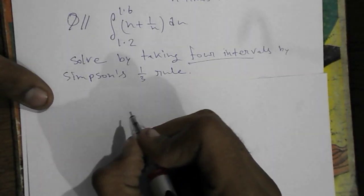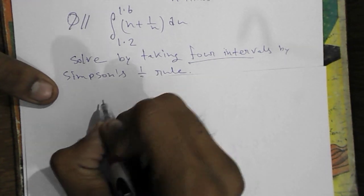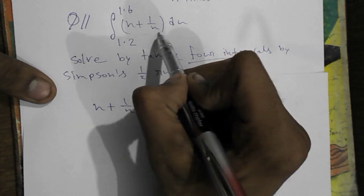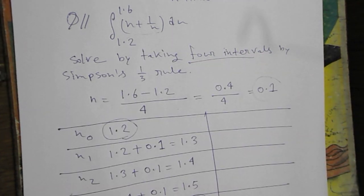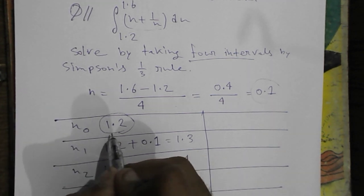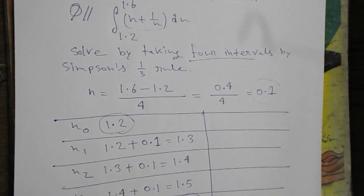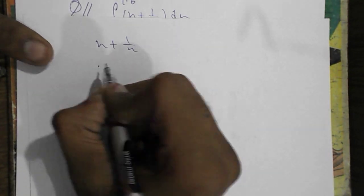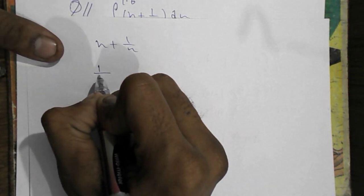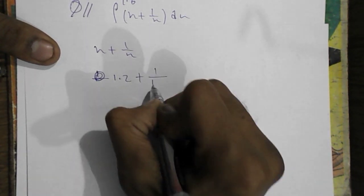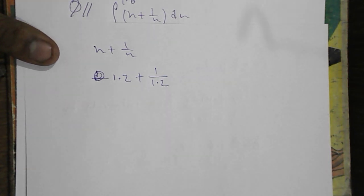First, the main equation is x plus 1 by x. Here we can see x plus 1 by x. And our first part, the x0 value is 1.2.